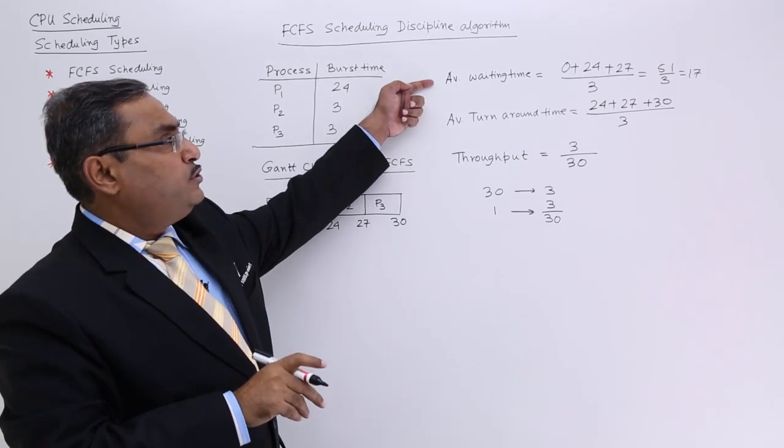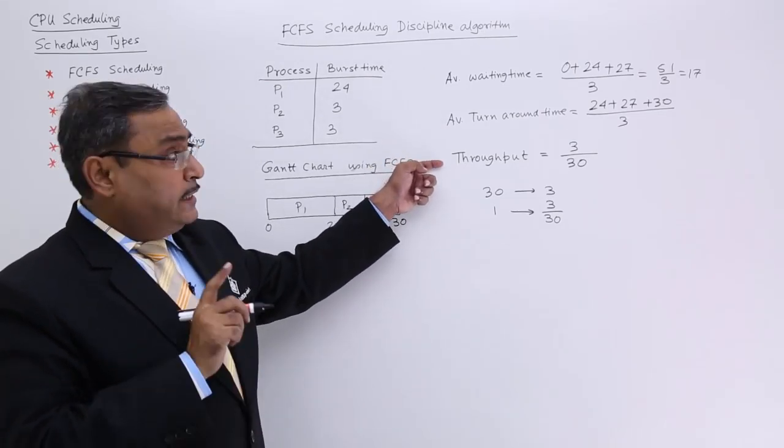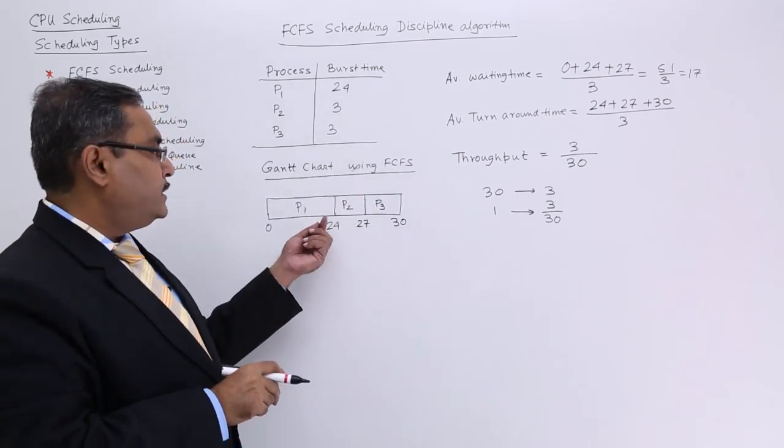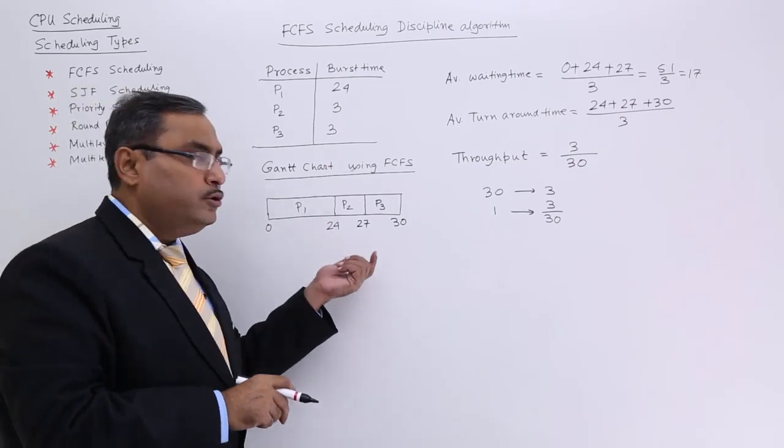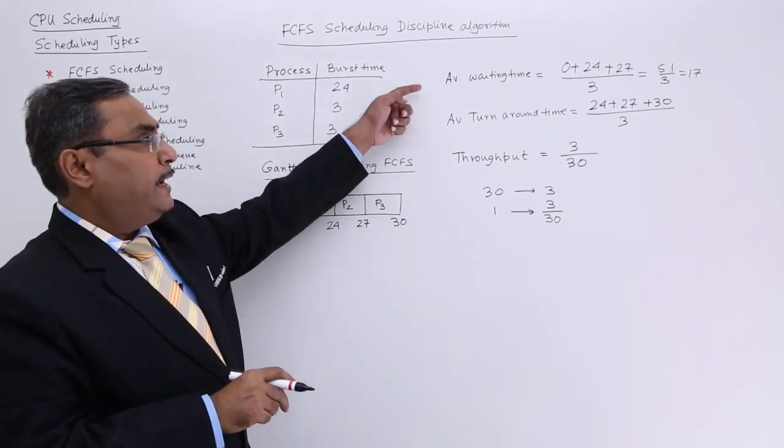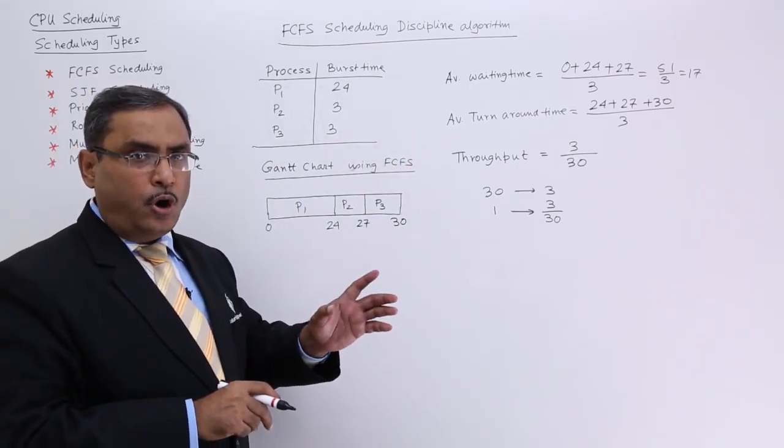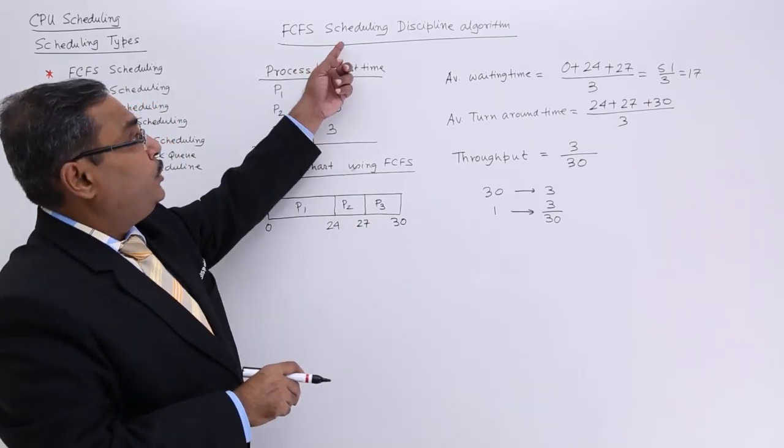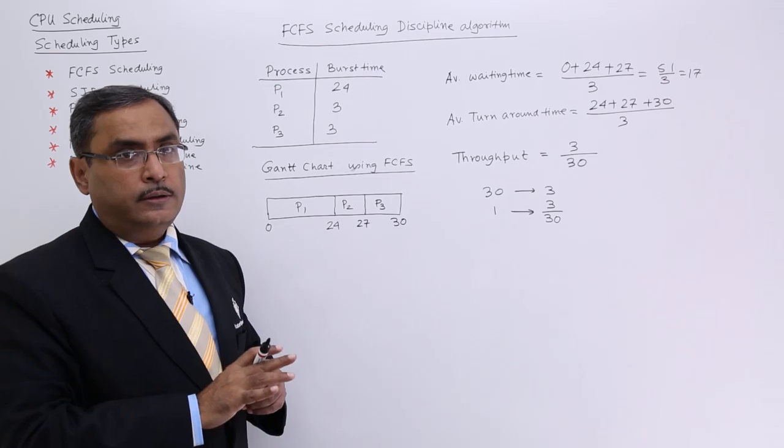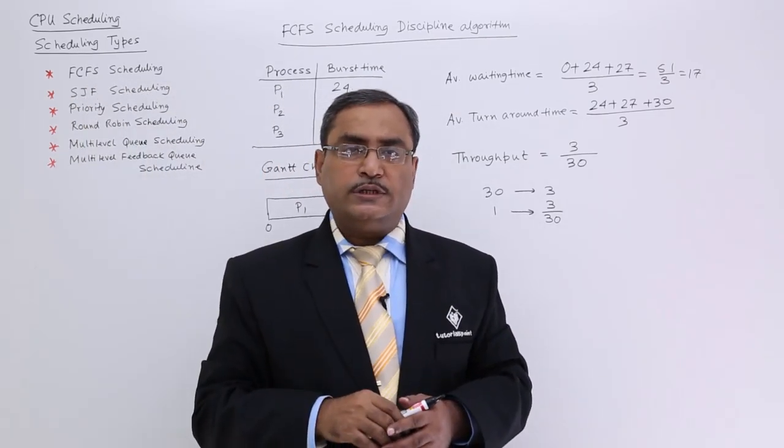In this way, the average waiting time and turnaround time are calculated. In this case, the average waiting time and response time will be the same because all processes have response time equal to their respective waiting time. Numerical problems on scheduling disciplines will appear in your GATE exam, so you should answer them properly. I hope you understand the logic of how I calculated these values. Thanks for watching.